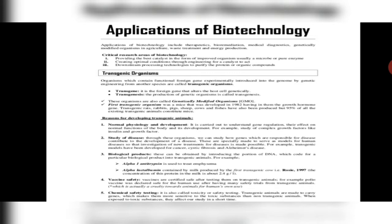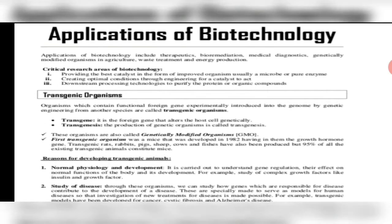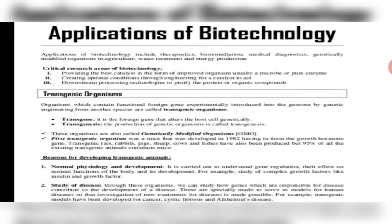So let us start. What are the critical areas of research in biotechnology? The critical areas include providing the best catalyst, developing enzymes to facilitate all the metabolic reactions, developing optimal conditions for the catalyst's performance, and downstream processing — modifying the product properly so that its shelf life and market value will increase.